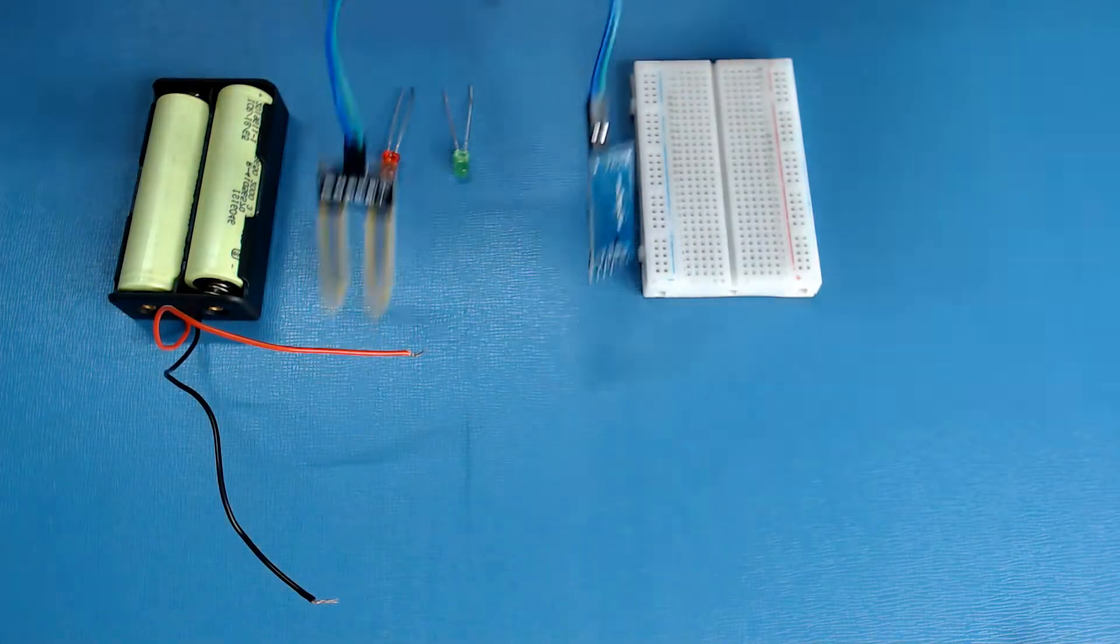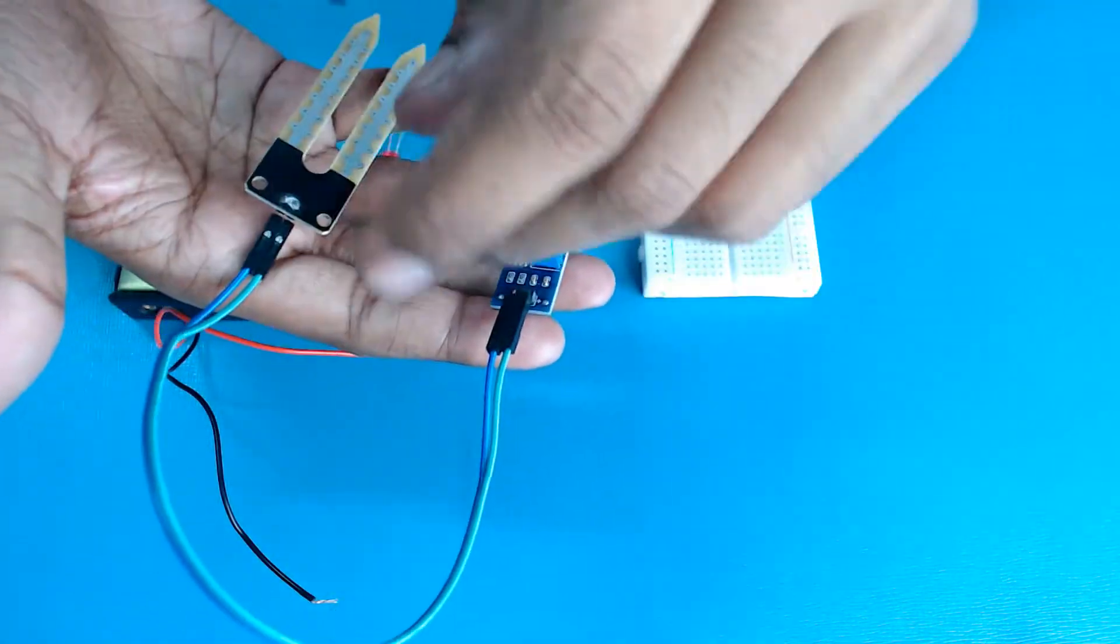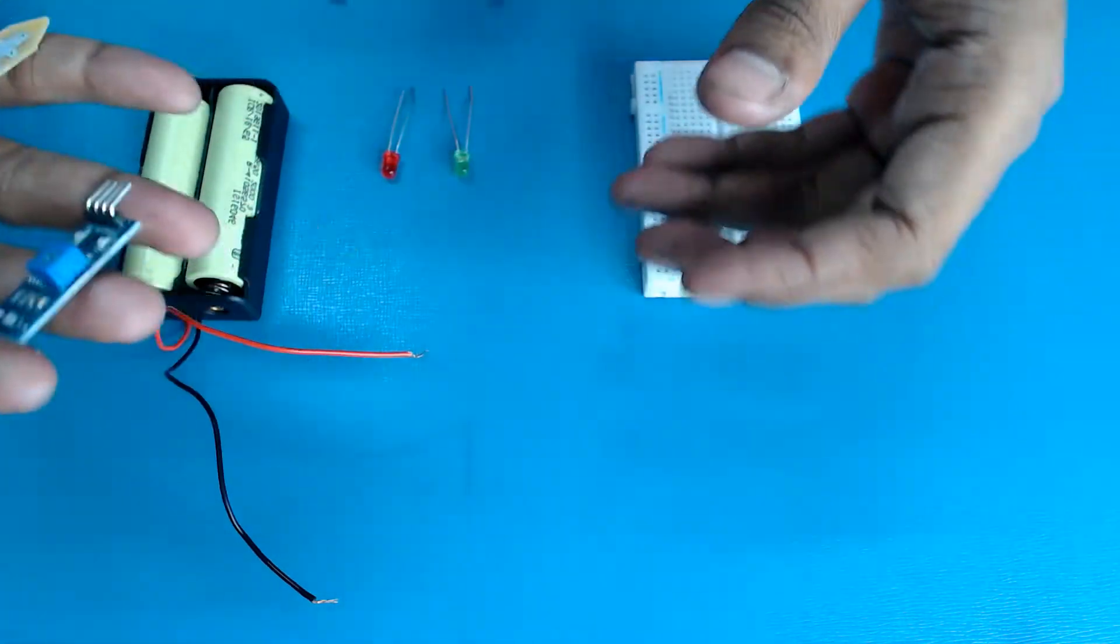As you can see, this is our soil moisture sensor and this is the I2C module which is used to connect our soil moisture sensor with our breadboard.